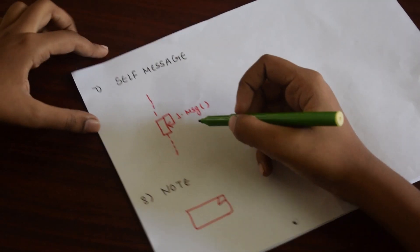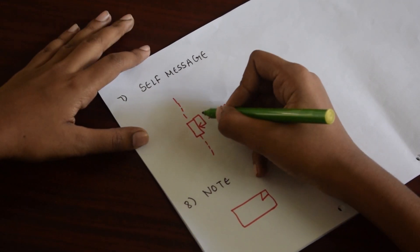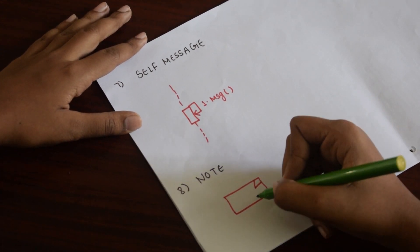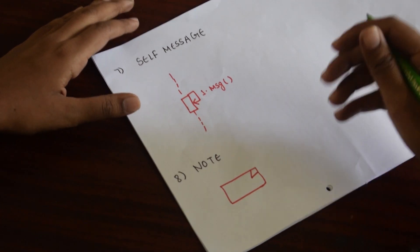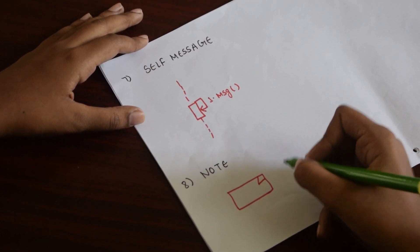Next is self-message, when an object sends a message to itself. Another one is note, which provides additional information or comments on the diagram.